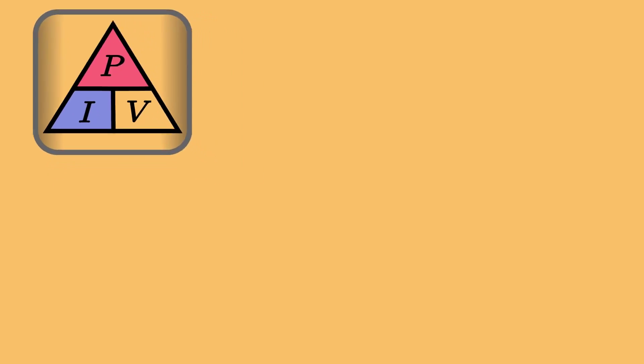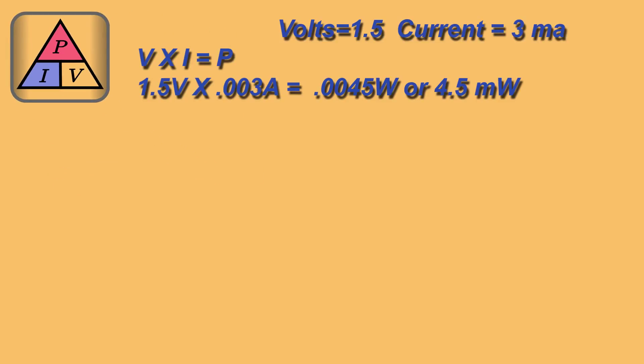So let's take a close look at power. Power over current times volts. What we already know from our previous formula is our volts are 1.5. Our current is 3 milliamps. So volts times amps equals watts, or 1.5 volts times 0.003 amps equals 0.0045 watts, or 4.5 milliwatts.